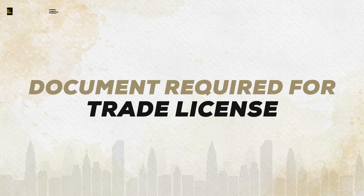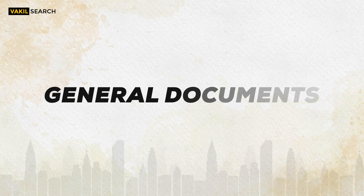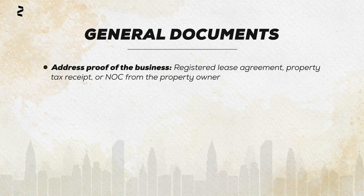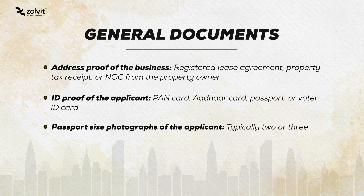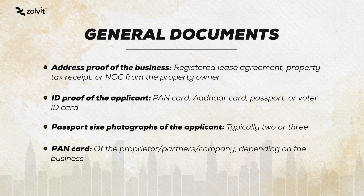Here are the documents you need to be ready with for getting your trade license registration. General documents include: address proof of your business such as a registered lease agreement, property tax receipt or NOC from the property owner; ID proof of the applicant such as PAN card, Aadhaar card, passport or voter ID; passport size photograph of the applicant, typically two or three; and PAN card of the proprietor, partners or the company depending on the business structure.